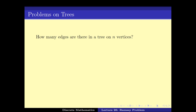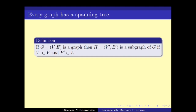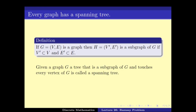There is one more definition: if you remove some set of edges and vertices from a graph you get a subgraph. A subgraph of G is called a spanning tree if it is a tree and it touches all the vertices. The question is: prove that every connected graph has a spanning tree as a subgraph. In other words, given a connected graph G, we can remove some edges such that the graph is still connected and forms a tree.